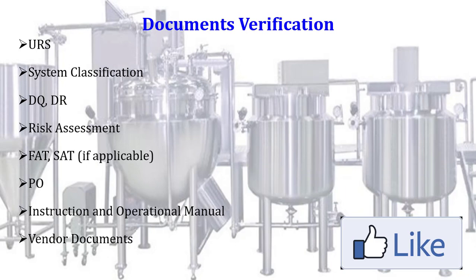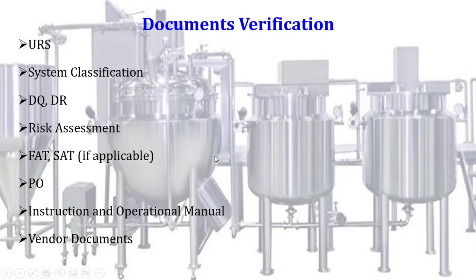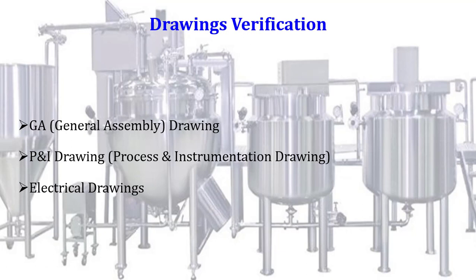Documents verification also includes purchase order verification, instruction and operational manual verification, vendor documents verification — which includes DQ, IQ, PQ documents and operation manual. In drawings verification, we generally verify GA — general assembly drawing — P&ID — process and instrumentation drawing — electrical drawings and other applicable drawings based on the design and type of equipment.